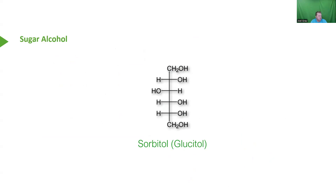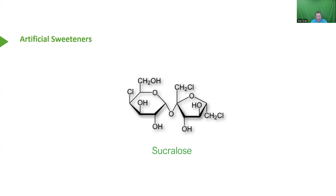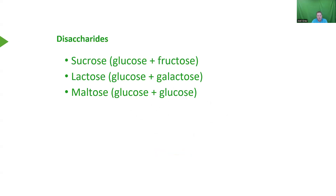One of the sugar alcohols mentioned earlier is sorbitol, also known as glucitol. There's also the artificial sweetener sucralose — a chlorinated disaccharide, though I don't expect you to know that name. Sucrose, lactose, and maltose are all examples of disaccharides. Glucose and fructose come together to make sucrose; glucose and galactose make lactose; and maltose is a combination of two glucose molecules. Notably, fructose is the ketose form of glucose, and galactose is the C4 epimer of glucose.